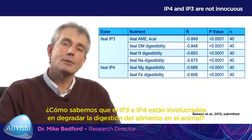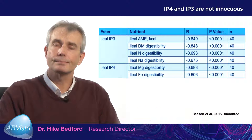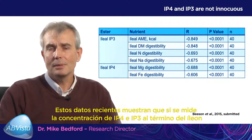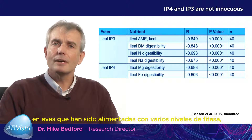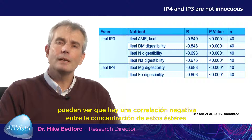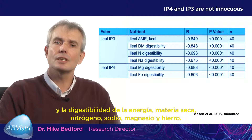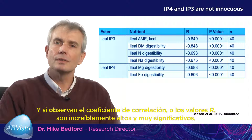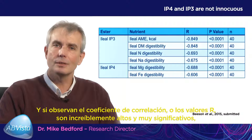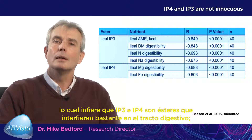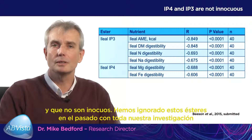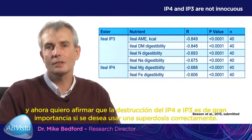How do we know IP3 and IP4 are involved in degrading the animal's ability to digest its feed? This recent data from 6 months ago shows that if you measure the concentration of IP4 and IP3 at the terminal ileum in birds fed various levels of phytase, there is a very negative correlation between the concentration of these esters and digestibility of energy, dry matter, nitrogen, sodium, magnesium, and iron. The R values are incredibly high and very significant, which suggests that IP4 and IP3 really are quite malevolent esters in the digestive tract. Today I want to identify that destruction of IP4 and IP3 is of great importance if you want to superdose correctly.